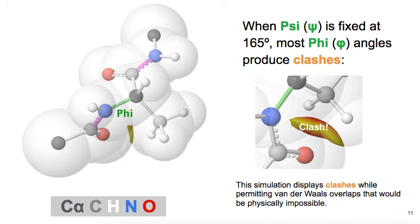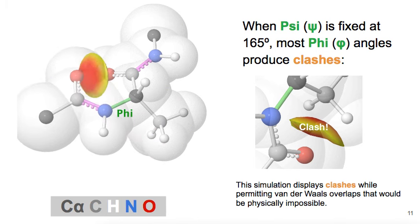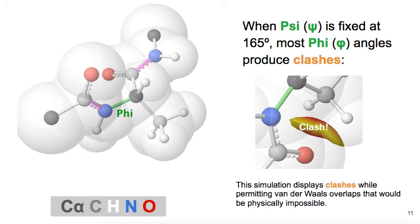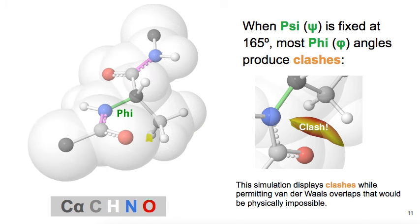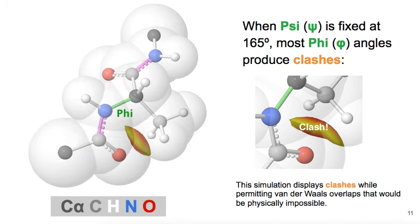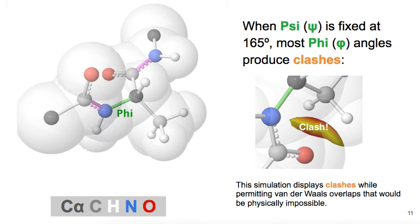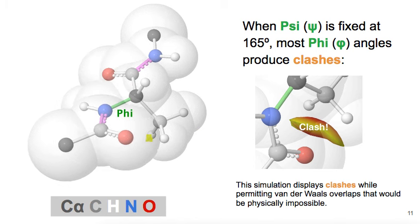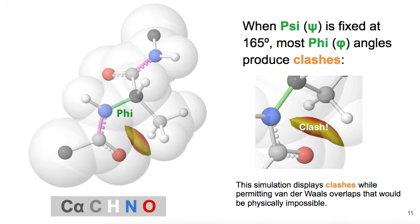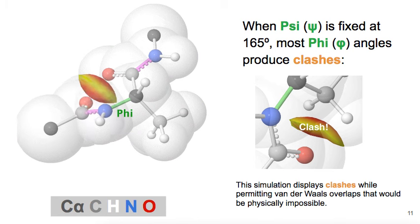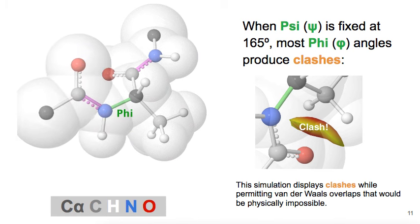They clash with each other. And these clashes are shown as the yellow and red objects that appear and disappear during rotation. Wherever these yellow and red objects appear, the clashes, that angle of phi would be impossible when psi is 165 degrees.